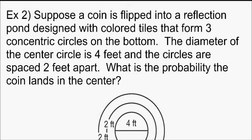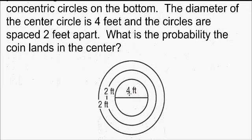Example 2. Suppose a coin is flipped into a reflection pond designed with colored tiles that form three concentric circles on the bottom. The diameter of the center circle is 4 feet. So you can see that here, diameter is 4 feet. And the circles are spaced 2 feet apart. What is the probability the coin lands in the center?